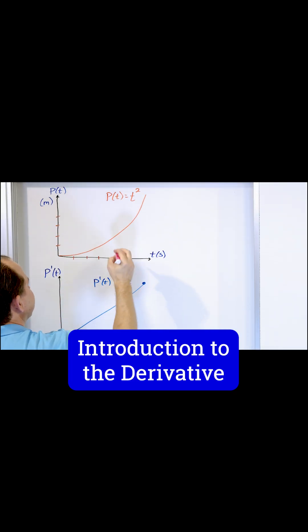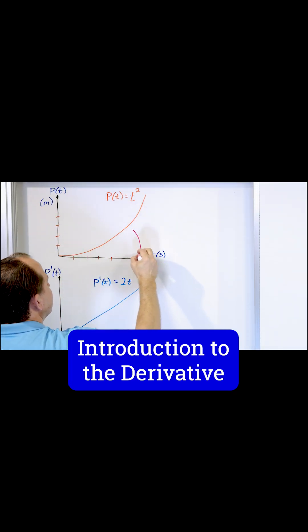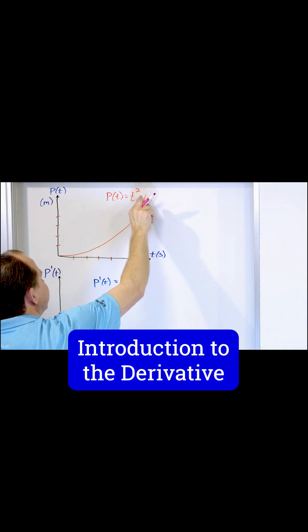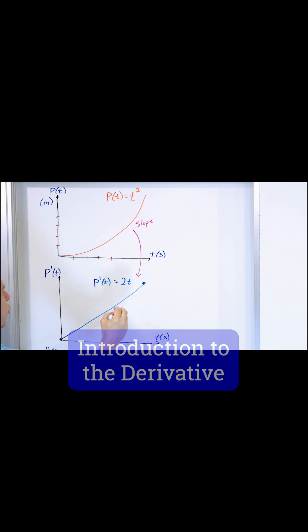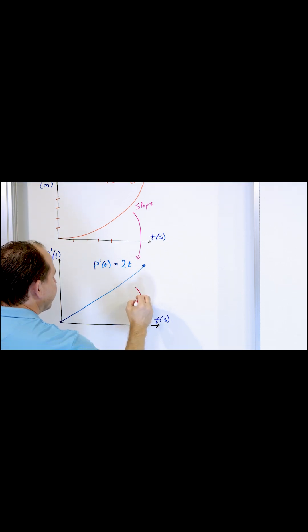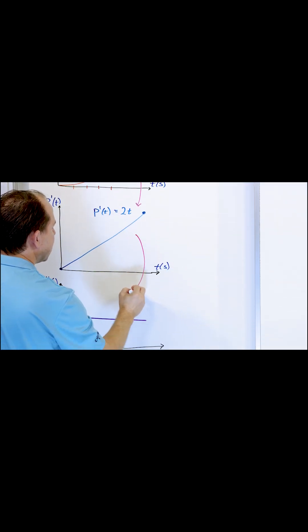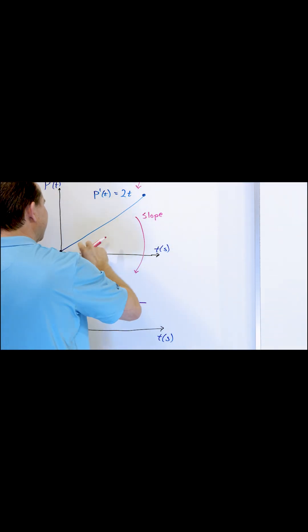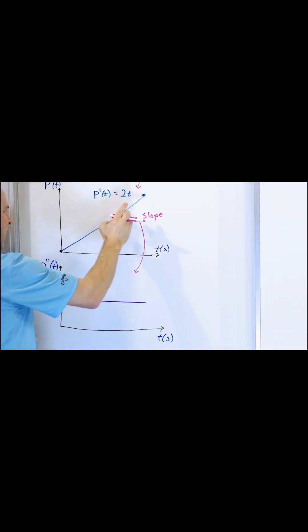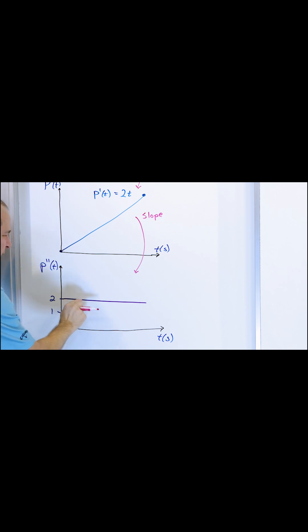To go from this curve to this curve, you're looking at the slope of the line tangent to the curve at any point. And when you go from this curve to this curve, you're also looking at the slope. But in this case, the slope is constant, so you just get a constant graph here.